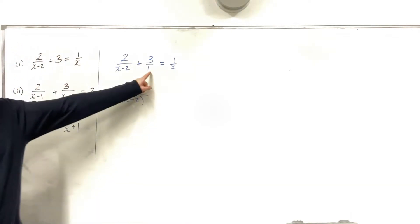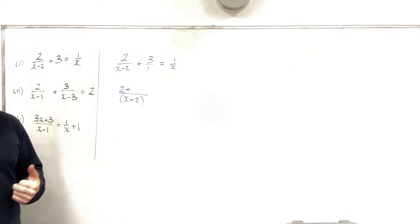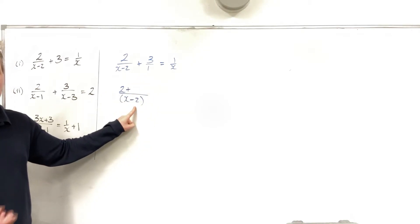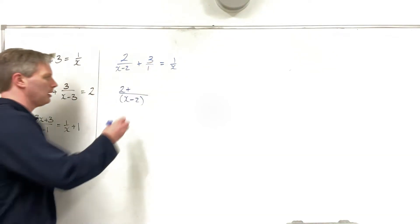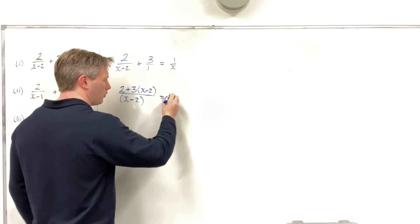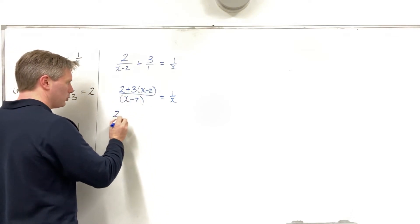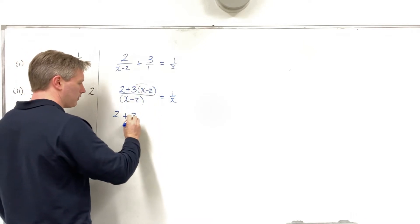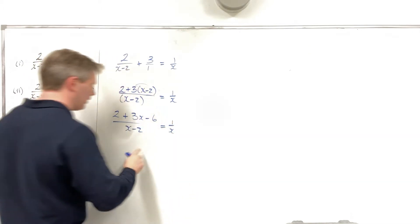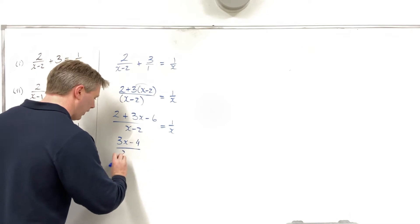I bring down a plus. 1 goes into x minus 2, x minus 2 times. So x minus 2 times 3 is my second term — that's 3 times x minus 2. I'll distribute that in just a moment, and I still have 1 over x on the right. Tidying up the numerator: distributing the 3 gives me 2 plus 3x minus 6, all over x minus 2, equal to 1 over x.